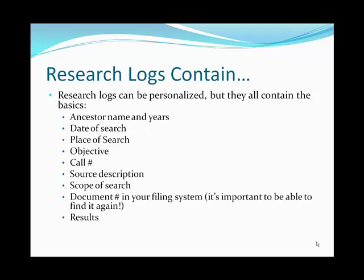Research logs contain many different things, but most all of them contain a basic ancestor's name and the years, date of search, place of search, objective, call number, websites, source description, scope of search, a document numbering system that you use in your filing system — because it's important to be able to find it again — and the results.